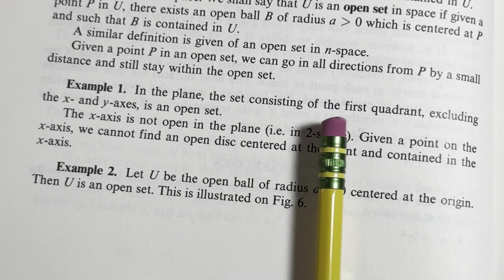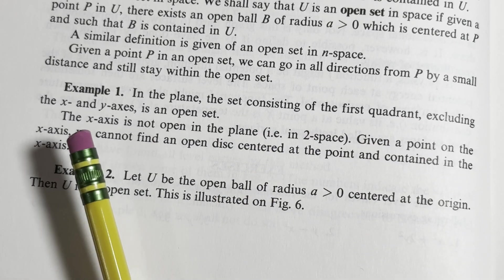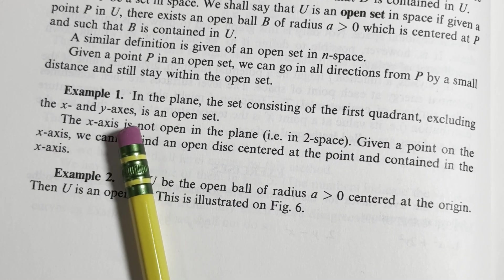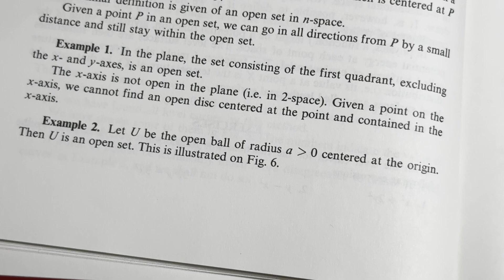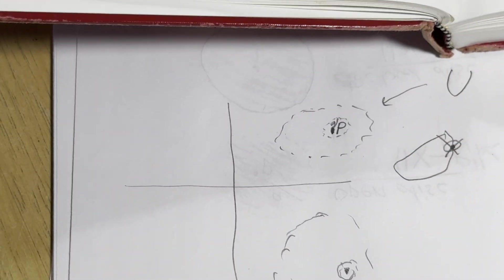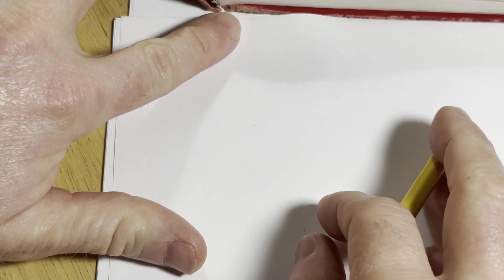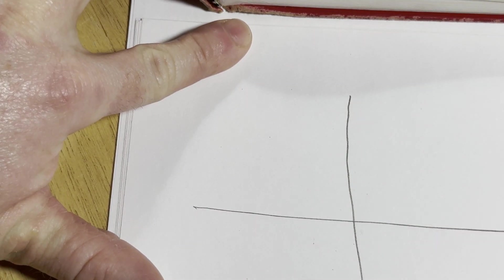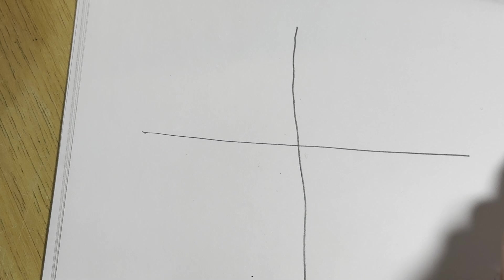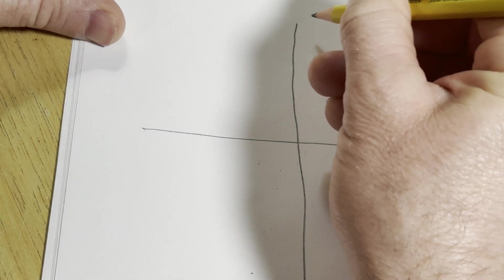In the plane, the set consisting of the first quadrant excluding the x and y-axis is an open set. Let's draw that picture so we can see what that looks like. So it says the plane excluding the x-axis and the y-axis, the first quadrant. So here's the xy plane. So there's x, and here's y.